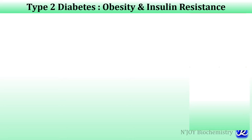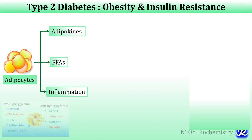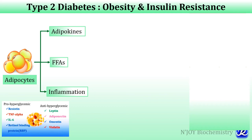Obesity is the most common cause of insulin resistance and is associated with type 2 diabetes. Adipocytes are considered an endocrine organ because they release adipokines. Anti-hyperglycemic adipokines secreted by adipocytes include leptin, adiponectin, omentin, and visfatin, while pro-hyperglycemic adipokines are resistin, tumor necrosis factor-alpha, interleukin-6, and retinol binding protein. Because of insulin resistance there is increased free fatty acid due to increased lipolysis, and this increased free fatty acid level is associated with insulin resistance — there is an inverse relationship between free fatty acids and insulin sensitivity. Inflammation is also a major contributor to insulin resistance and beta cell dysfunction.